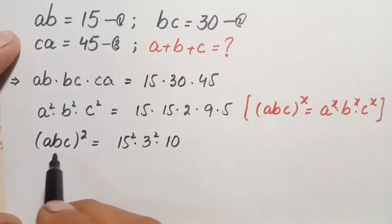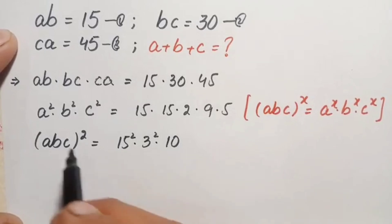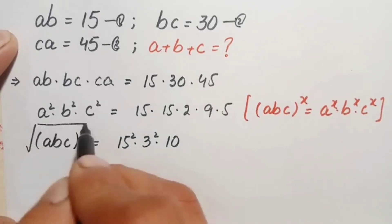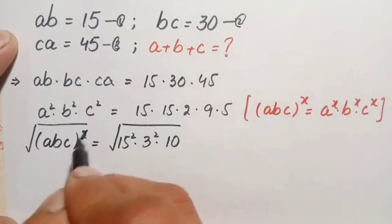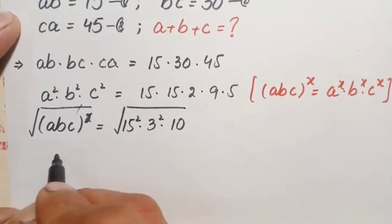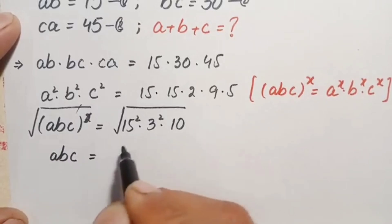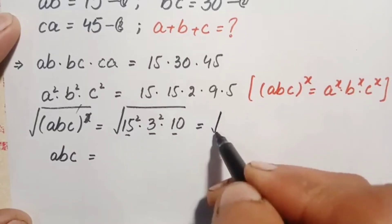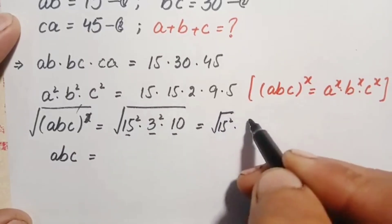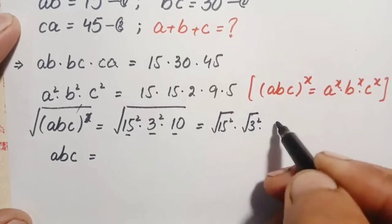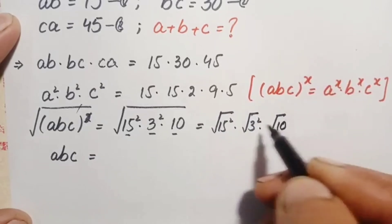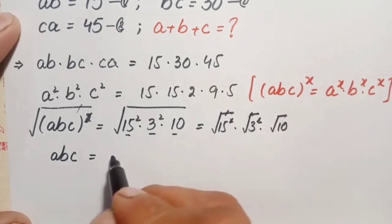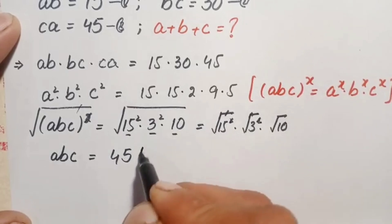Now there is a square on the left-hand side, so we take the square root on both sides to eliminate it. The left-hand side becomes abc. On the right-hand side, the square roots of 15² and 3² cancel their squares, giving 15 times 3, which is 45. So abc equals 45 times square root of 10. Let us call this equation number four.